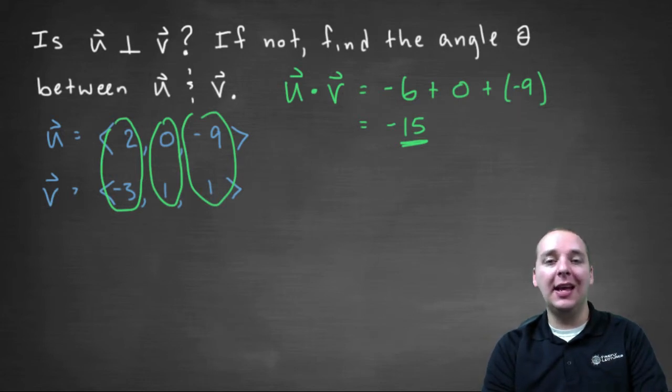Now we can actually still figure out what that angle is using this dot product. There's a formula that we should be familiar with. It's u dot v.